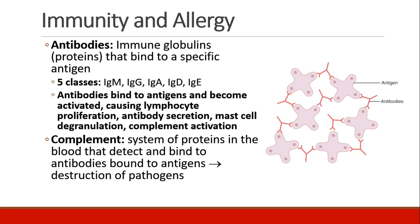An antibody is an immunoglobulin — a protein which is designed to bind to a specific antigen. There are five different classes of antibodies. IG stands for immunoglobulin, so there's IgM, IgG, IgA, IgD, and IgE. Antibodies bind to the antigen when they occur in the body and become activated. This causes lymphocytes to proliferate, more antibodies to be secreted, the mast cells to degranulate and release their chemicals, and the complement system gets activated, leading to an immune reaction. This picture here shows an antigen and some antibodies recognizing and binding to the antigens.